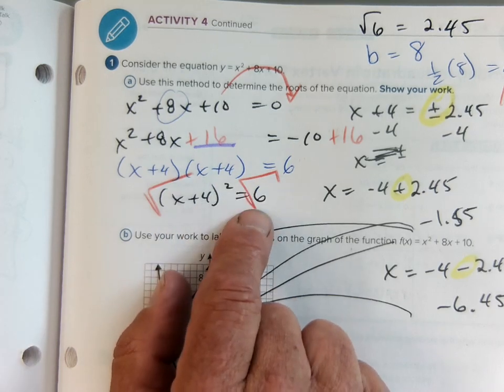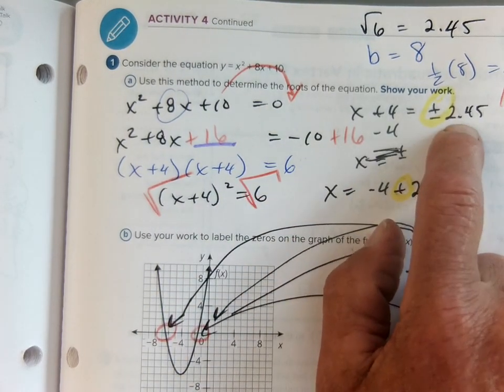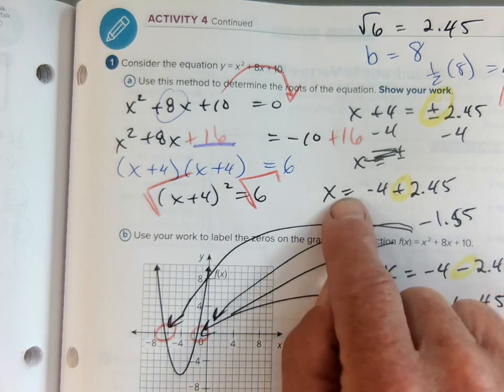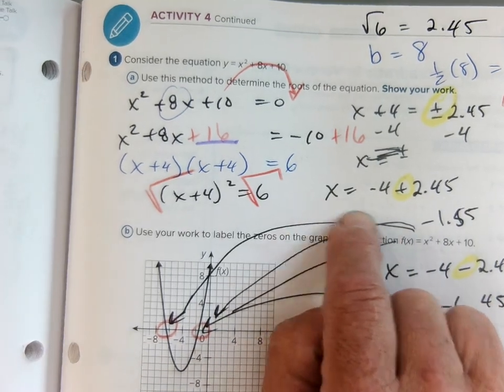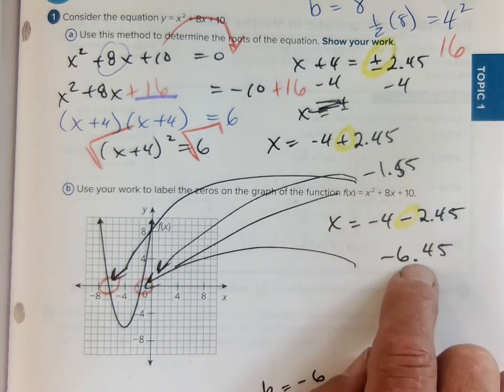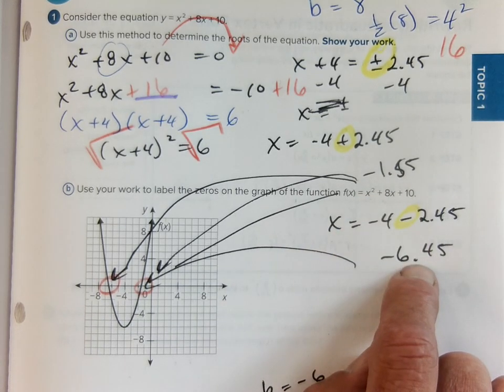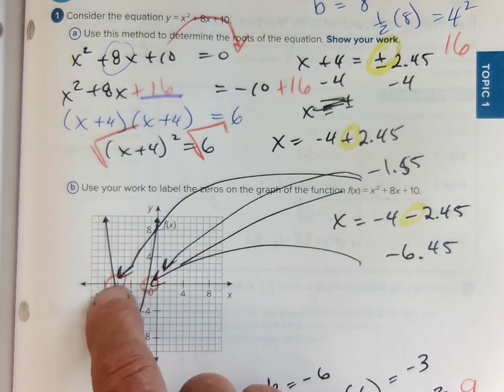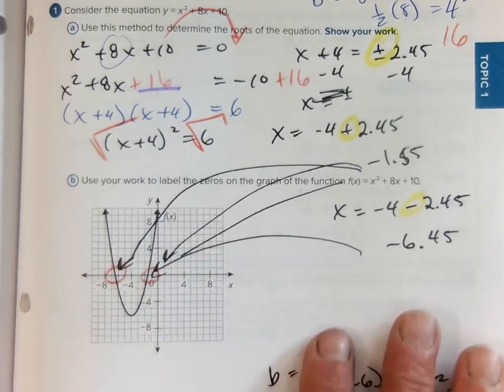Square root of both sides. Square root of 6 is about 2.42 but two answers. So I have an x. Then it's going to equal two answers which is a negative 1.55 and a 6.45. Now those are these zeros on the graph.